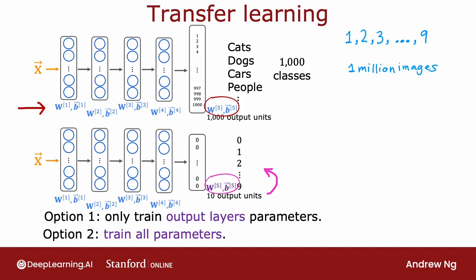hopefully it can end up at a pretty good model. So these two steps - first training on a large dataset and then tuning the parameters further on a smaller dataset - go by the name of supervised pre-training for the step on top. That's when you train the neural network on a very large dataset of say a million images of not quite the related tasks. And then the second step is called fine tuning, where you take the parameters that you had initialized or gotten from supervised pre-training and then run gradient descent further to fine tune the weights to suit the specific application of handwritten digit recognition that you may have.